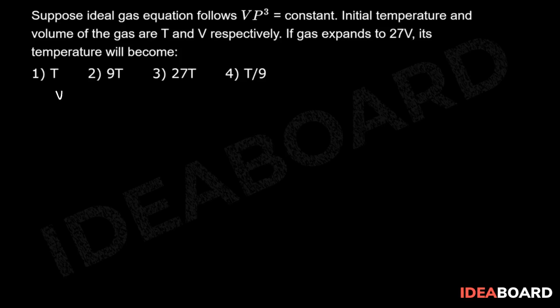In this question, the given condition is VP³ = constant, or we can write V and P cube. P can be written as nRT by V whole cube, and that will be a constant. So we can write that V into T cube by V cube is a constant, that means T cube by V square is a constant.